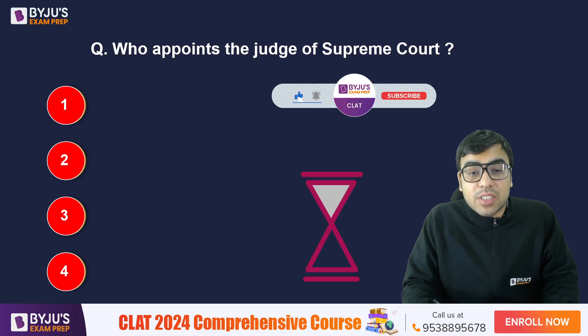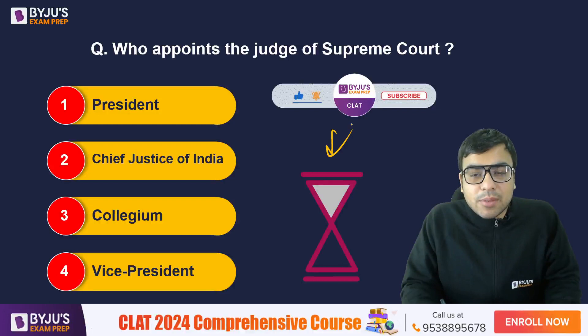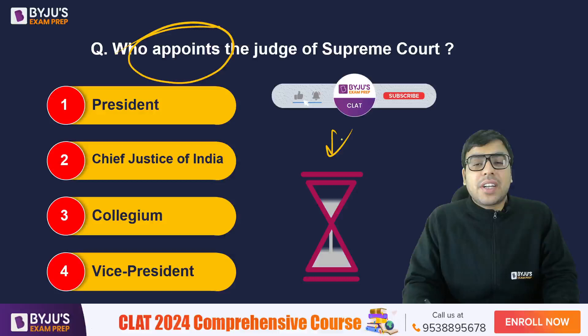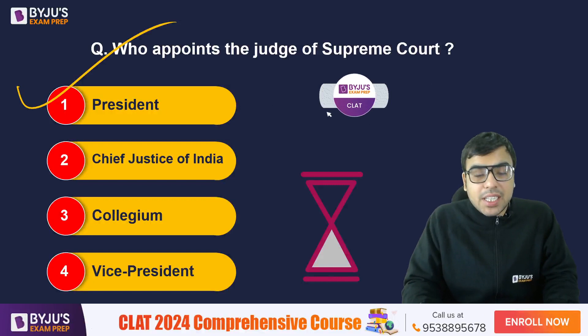Question: Who appoints the judges of the Supreme Court? Your options are: A) President of India, B) Chief Justice of India, C) the Collegium, D) Vice President of India. The appointment of a judge of the Supreme Court is done by the President on the recommendation of the Collegium. So the answer is A — the President of India. The Collegium recommends, but it is not correct to say that the Collegium appoints the judge.